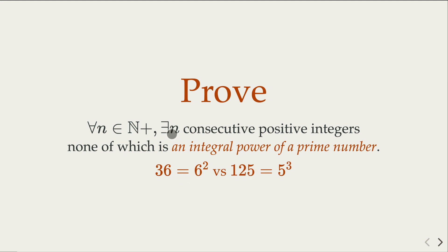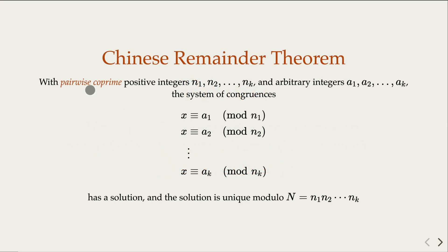For this proof, we rely on what is called Chinese Remainder Theorem, which states for this system of congruence equations here, and modulus here n₁ to nₖ, they are pairwise coprime. And a₁, a₂, and aₖ, those are arbitrary integers.